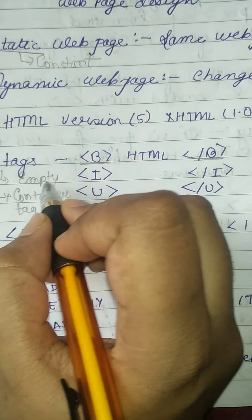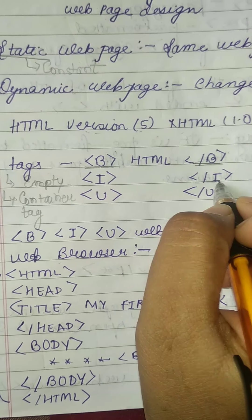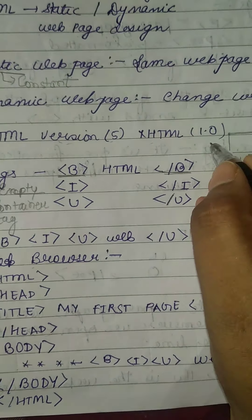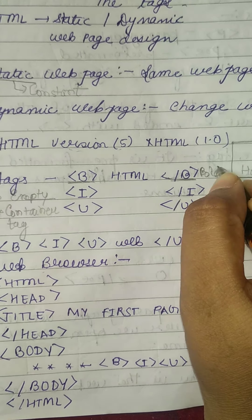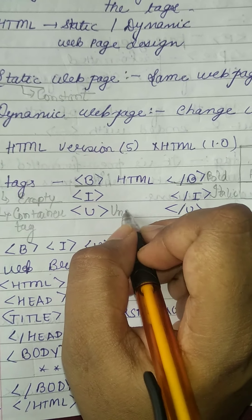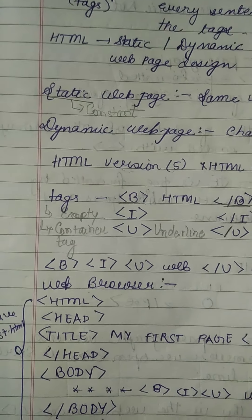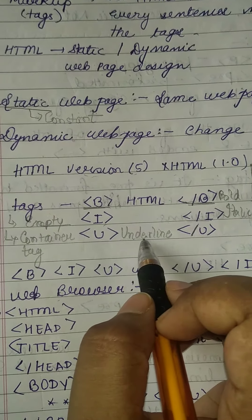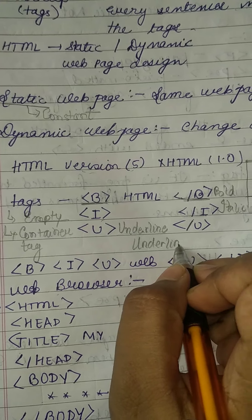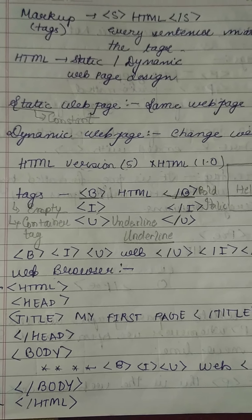In an empty tag, you don't need any closing tag. A container tag needs a closing tag. The B tag is for making letters bold, the I tag is for making text italic, and U is for underlining. Whatever you write inside the U tag will be underlined.